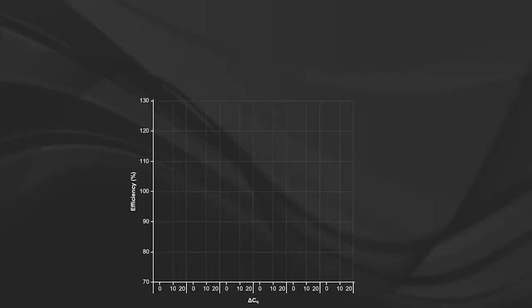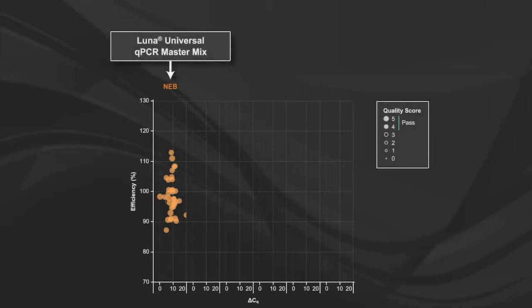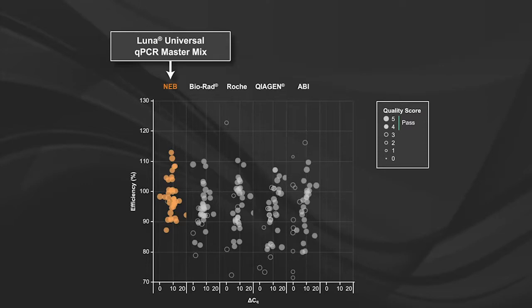This analysis method allowed us to quickly compare results across multiple targets or conditions and across a large dataset in order to better observe trends. For example, here we see the dataset that includes the Luna Universal qPCR master mix compared to a variety of other commercial mixes designed for DNA dye-based qPCR, for example, SYBR.